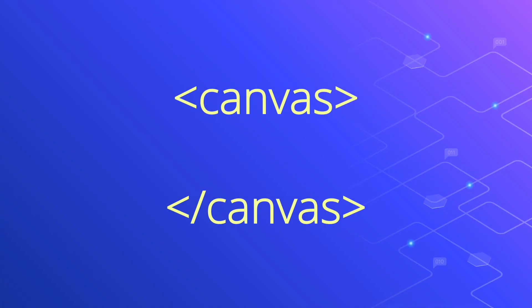To draw a canvas, all we need is these two tags in the body of our HTML pages: the opening canvas tag and the closing canvas tag. We can specify a height and width for our canvas. If we don't specify a height and width, the canvas will be 300 pixels in width and 150 pixels in height.